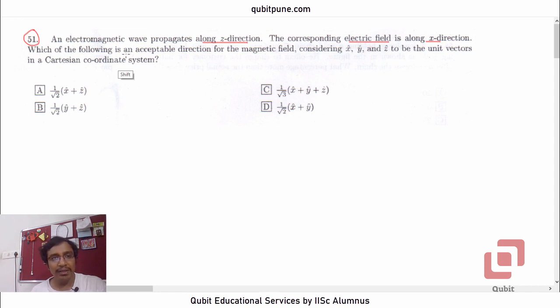Which of the following is an acceptable direction for the magnetic field, considering X cap, Y cap, and Z cap to be the unit vectors in a Cartesian coordinate system? We have four options.